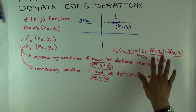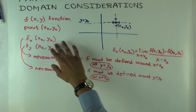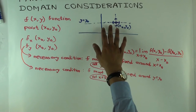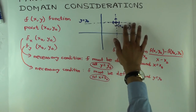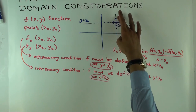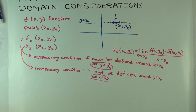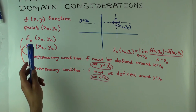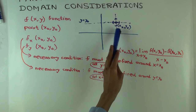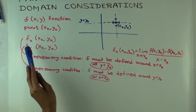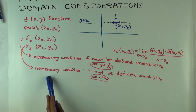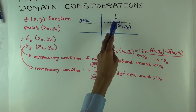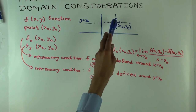In fact, for the corresponding partials to exist, both these functions need to be defined in those directions, and they should also be continuous from the respective directions — though we won't go into that right now. Another way of saying this is: for f sub x, f should be defined not just at the point but if you perturb x slightly keeping y fixed; and for f sub y, it's necessary that f should be defined not just at the point but if you perturb y slightly.